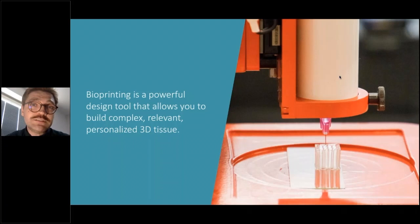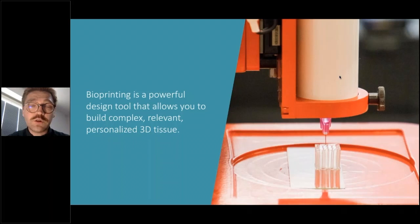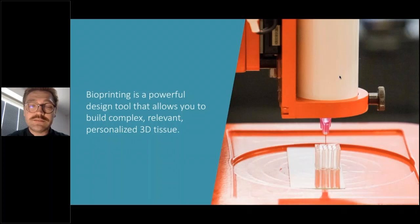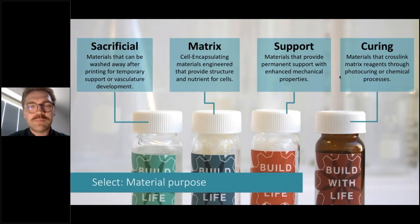Traditional techniques to introduce vasculature were based on self-assembly properties of endothelial cells. With bioprinting, you have precision and spatial control over where to place cells and what the geometry of your scaffold will be. Today I'll present a few materials and strategies for printing these channels, along with examples of how our users apply these techniques. The focus is on different hydrogels — specifically the functions of sacrificial and matrix inks rather than their origin.